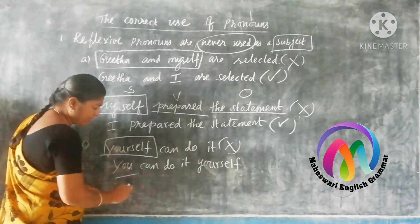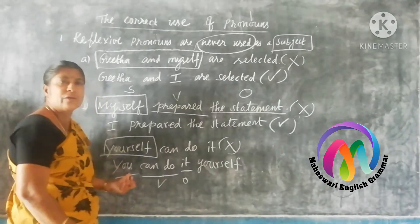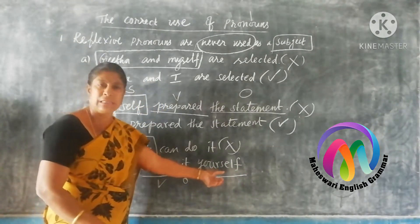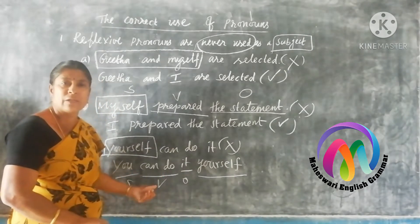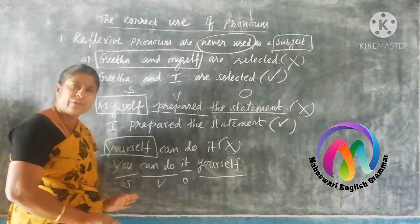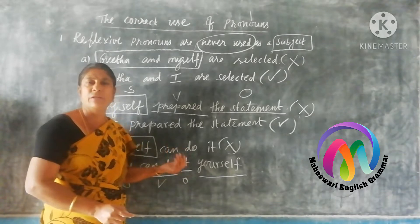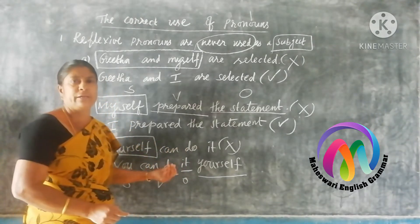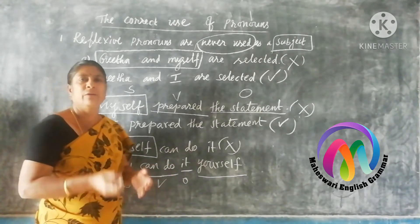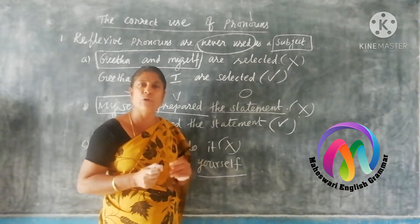So you can say 'You can do it yourself.' Here, 'you' is the subject, 'can do' is the verb, and 'it' is the object. The reflective pronoun 'yourself' is not in the place of subject here. If it comes in the subject place, it is wrong. So the correct answer is 'You can do it yourself.' The rule is: reflective pronoun is never used in the place of subject.